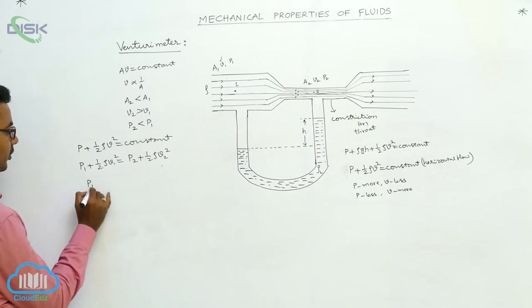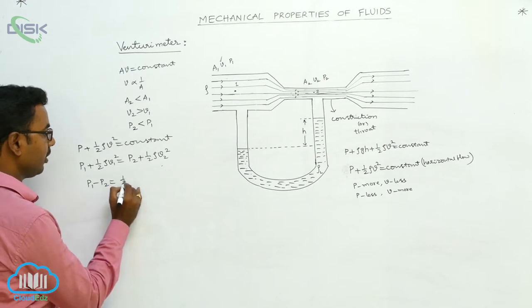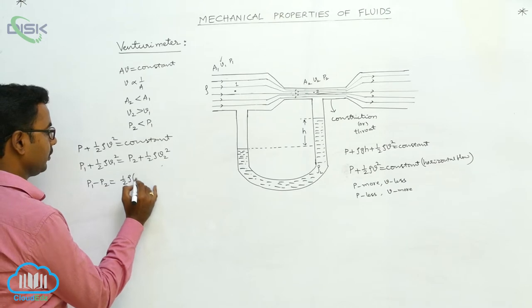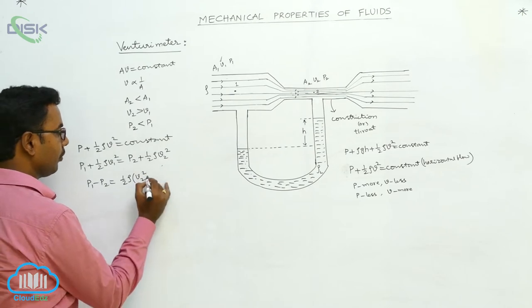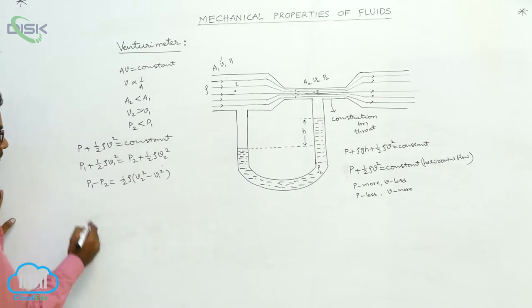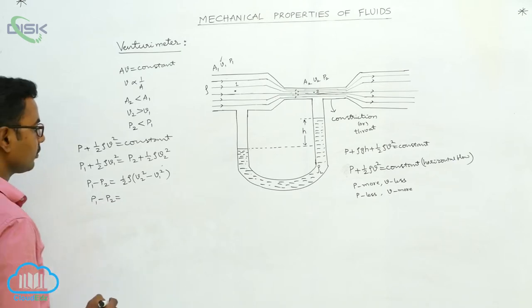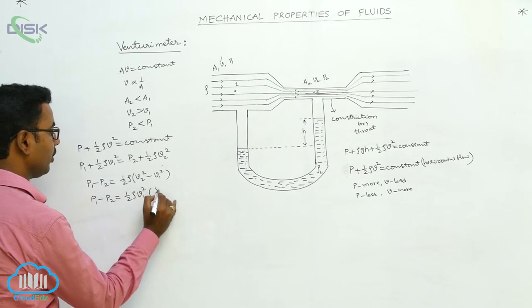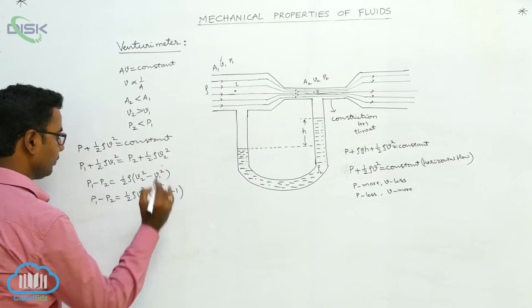Rearranging, P1 minus P2 equals one-half rho into (V2 squared minus V1 squared). Taking V1 squared common, this becomes one-half rho*V1 squared into ((V2 squared / V1 squared) minus 1).